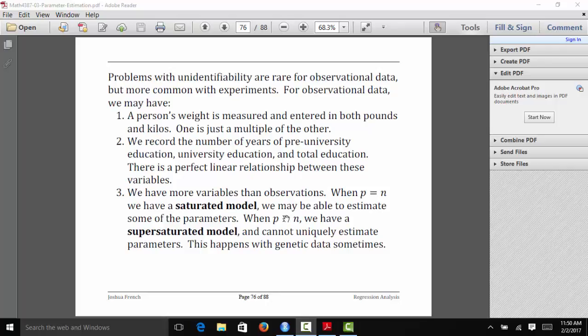Having a problem with unidentifiability is very rare for observational data, but it does happen more frequently with experiments. For observational data, it's usually caused by doing something silly with the data. For example, you might have a person's weight measured in both pounds and kilos. There's a one-to-one relationship between those two variables, so they're a linear combination of one another.